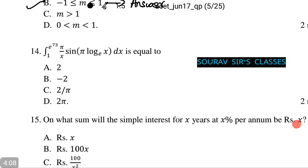Moving on, we have a definite integral from 1 to e to the power 73 pi by x sin of pi log x with base e dx. Let's again calculate this to figure out the answer.